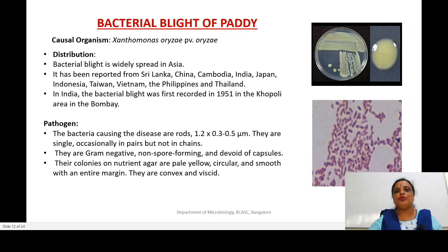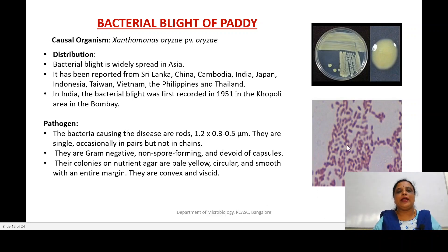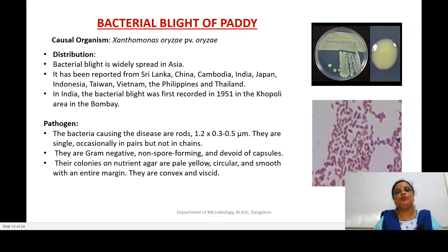Xanthomonas oryzae pv. oryzae — as studied in the previous class — is a gram-negative bacteria. As you can see in the image, it is gram-negative, motile, aerobic, non-capsulated, and devoid of spores. An important characteristic feature is that they have a single flagella at one terminal — it is monotrichous flagella that can be observed in this group of organisms.